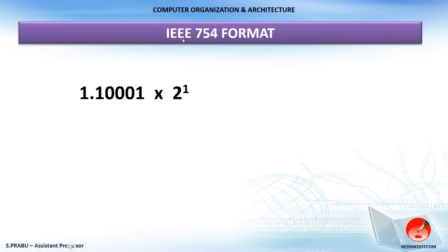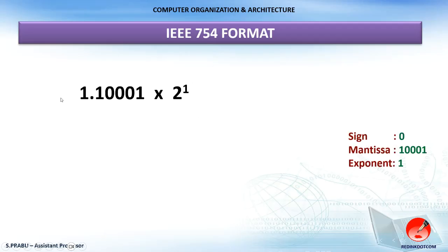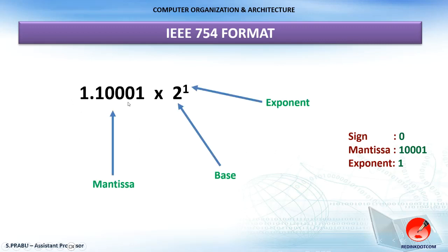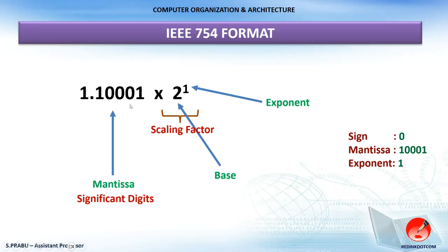Let's look at the individual components of the IEEE 754 format. The format is written as: the number always starts with 1, followed by a dot, then the remaining fractional part (the mantissa), multiplied by the base (which is 2 for binary) raised to the exponent value. The sign value indicates positive (0) or negative (1). The mantissa is the actual fractional part, the exponent is the power, and the base is the radix. Before the dot there is always 1, which is the scaling factor, and the digits are the significant digits.